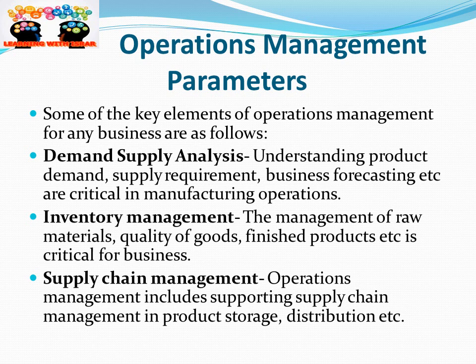Next is Inventory Management. Inventory is a major area of Operations Management — the management of raw material, quality of goods, and finished goods is critical for the business. Operations Management also takes care of these things, including supporting Supply Chain Management in product storage like Warehousing and Distribution.